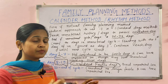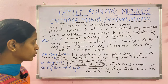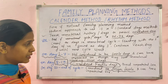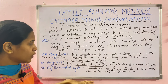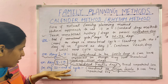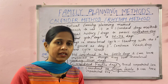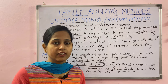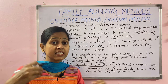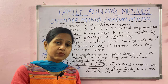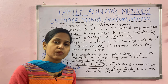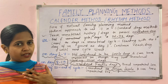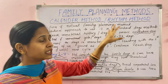From day 20 to the end of the cycle, these are no longer considered fertile days, so unprotected sex can be resumed. After this, the next menstrual cycle will begin, and the first day of the new bleeding will again be counted as Day 1. This is the calendar method and rhythm method.